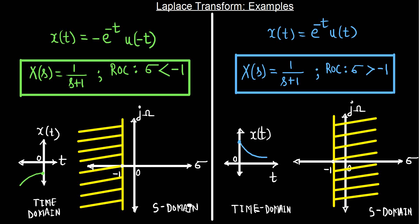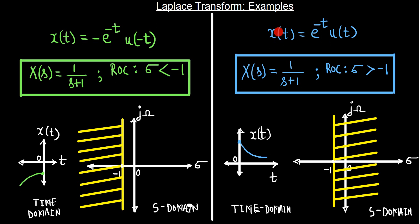In the previous module, we saw the Laplace transform of two different signals. As a summary, I have shown these signals and their Laplace transforms on the screen. The signal x(t) = e^(-t)u(t) has the Laplace transform 1/(s+1) with the region of convergence σ > -1. This signal is right-hand sided, and the region of convergence is also right-hand sided.